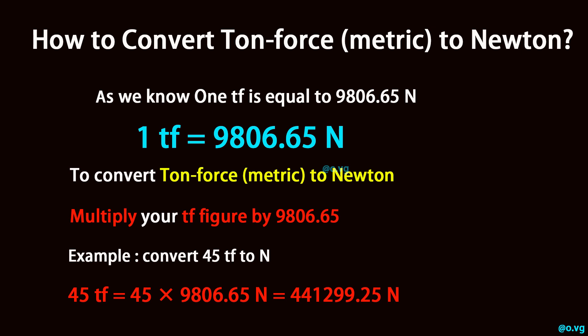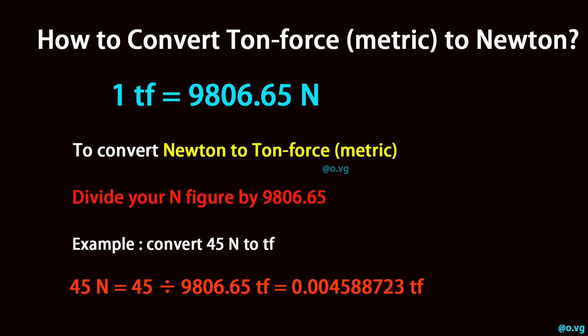Example: convert 45 ton-force metric to Newton. 45 ton-force metric is equal to 45 times 9806.65 Newton, which equals 441,299.25 Newton. To convert Newton to ton-force metric, divide your Newton figure by 9806.65.